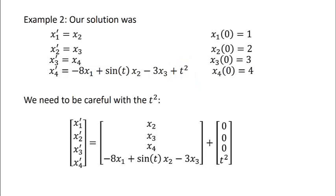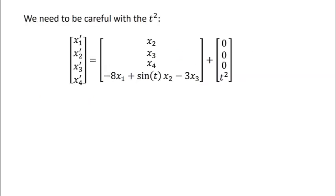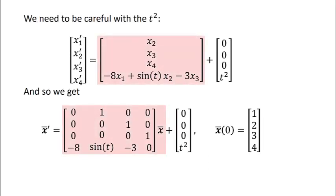Okay, and then we want to take this matrix with these x's in it and write it as a matrix product. So let's do that. So when we do that, we get our x bar prime equals the 4 by 4 matrix that you see here times x bar, and then plus that vector containing that t squared. And then we finally also have a vector telling us about our initial conditions x bar of 0 equals 1, 2, 3, 4.